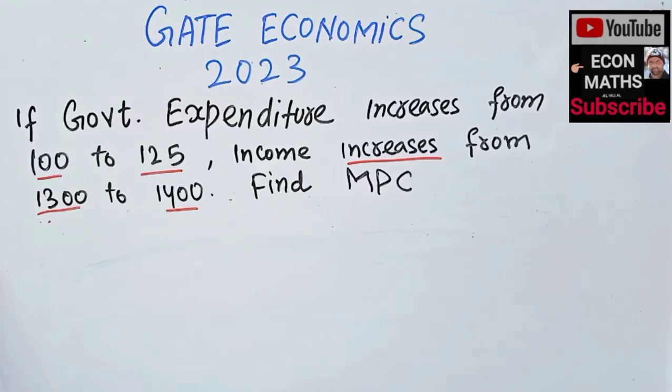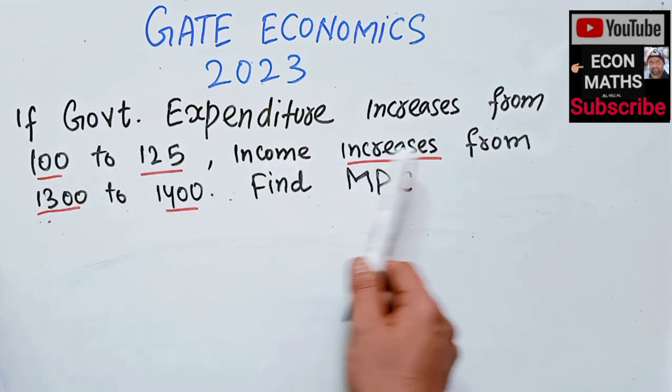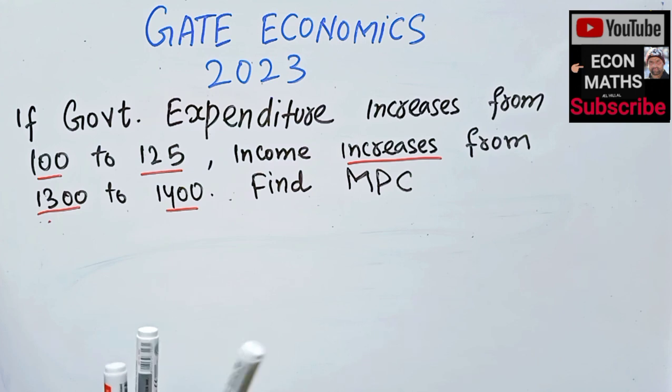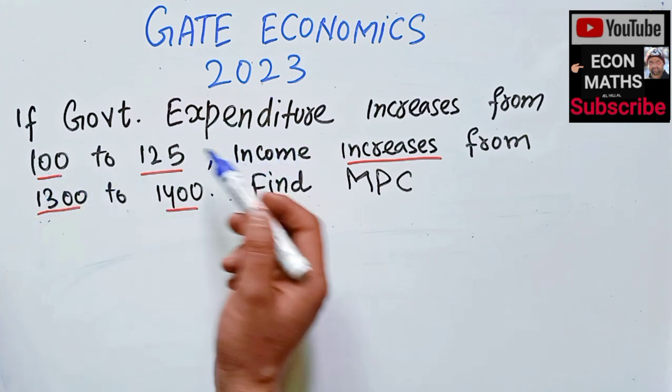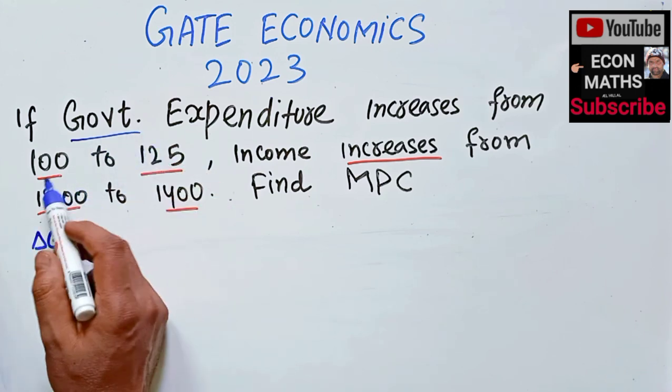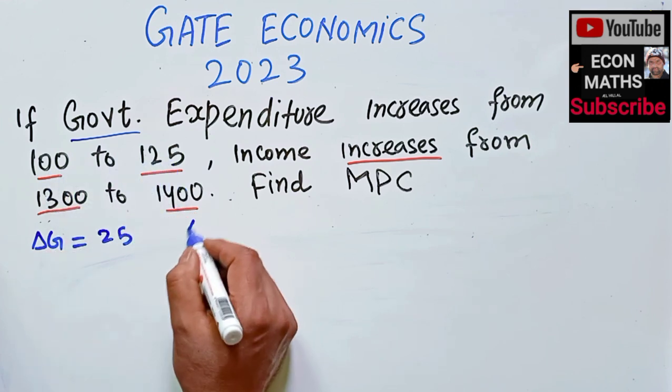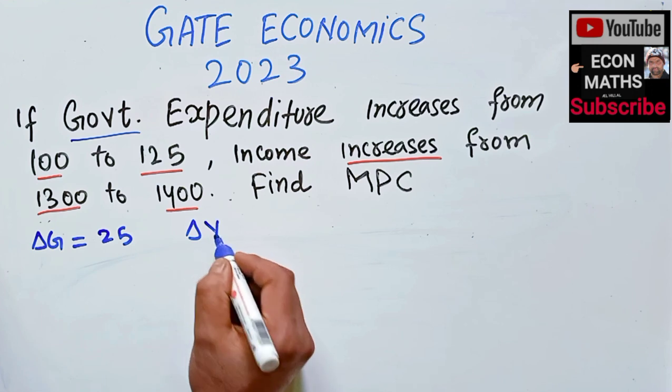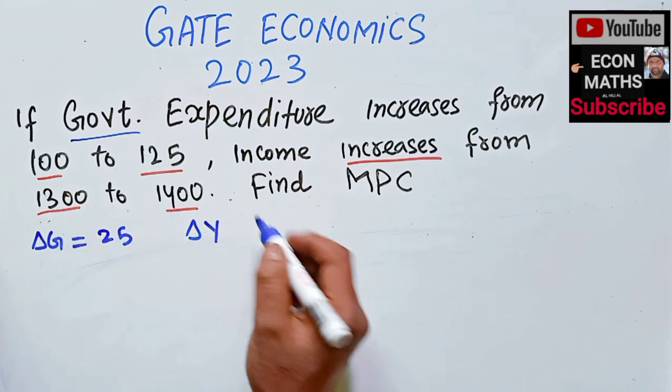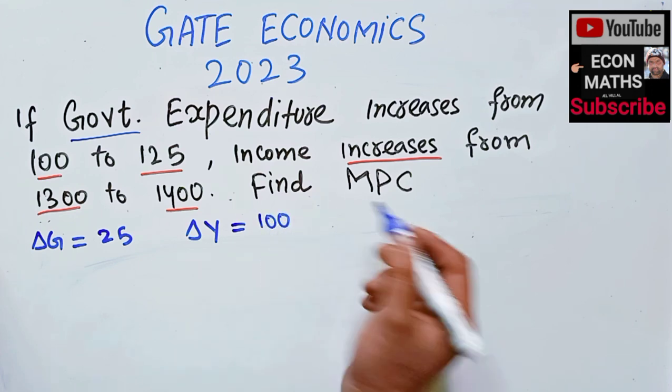Another question from GATE Economics 2023: If government expenditure increases from 100 to 125, and income increases from 1300 to 1400, find the marginal propensity to consume. The change in government expenditure is 25 (from 100 to 125), and the change in income is 100 (1400 minus 1300). We need to find the MPC.